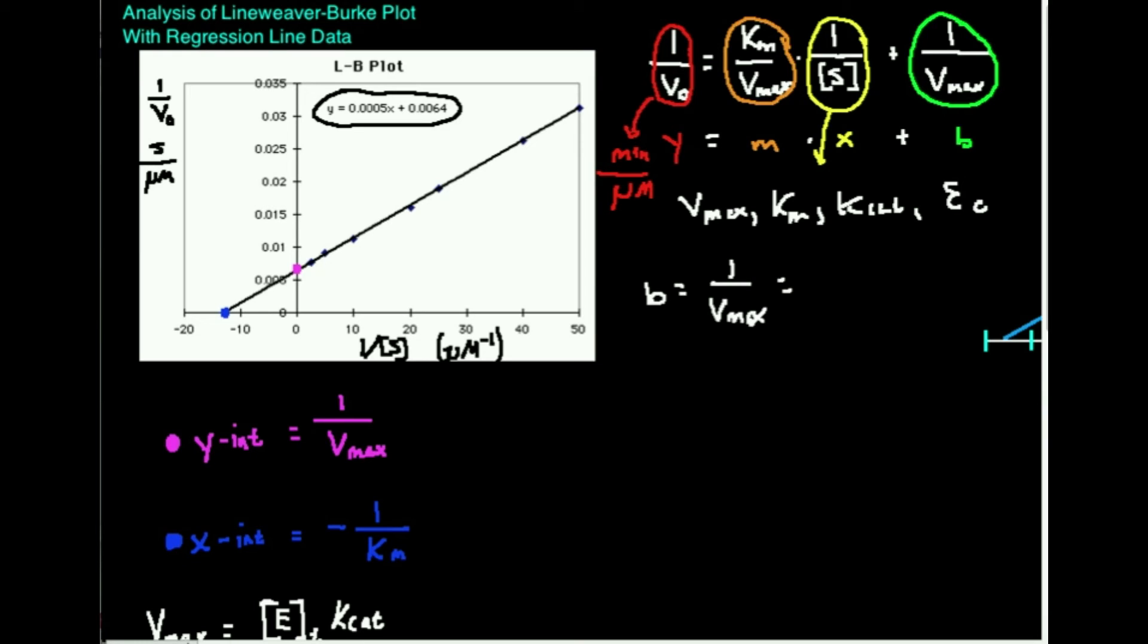The b, the y-intercept, is 0.0064, and if I wanted to include the units of it, it would simply be seconds per micromolar. That's what's given here. So this is seconds per micromolar. So how would I determine the Vmax?